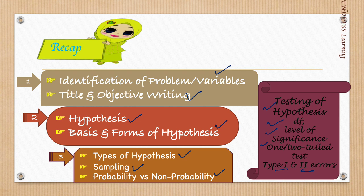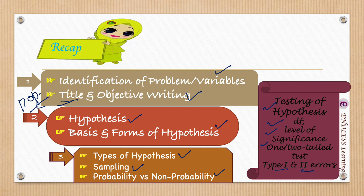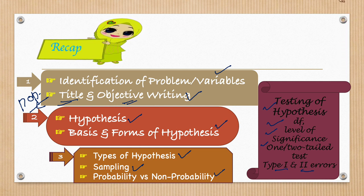When we identify the problem and write down the title, from the title we get information about the population on which we have to research. From the title we get information about from whom we have to collect the data, but the information about the variables — for which variables we have to collect the data — is given by the objectives.